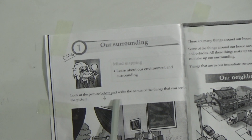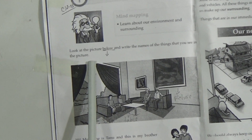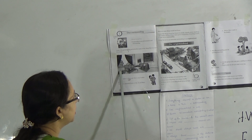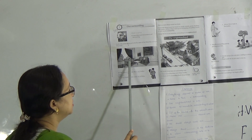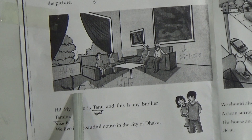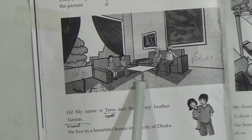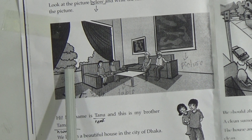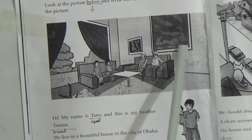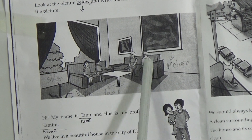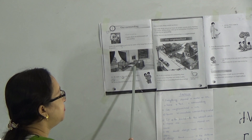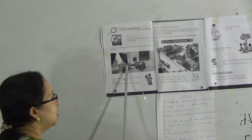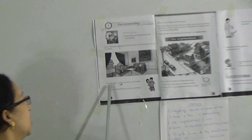Look at the picture below and write the names of the things that you have seen. In your book there is a picture of a drawing room. You see two elder persons sitting on the sofa, and two boys and one girl also sitting in the drawing room. There is a center table, a window, and outside the window we see green plants. There is a mat. It's a family picture of two elder persons and their children sitting in the drawing room.